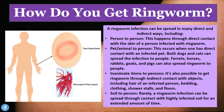Ringworm infection can be spread in many direct and indirect ways, including person to person. This happens through direct contact with the skin of a person who is infected with ringworm. This is especially common in a kindergarten or daycare setup where children playing together can come into direct skin contact with the lesion on a friend's body and contract the disease in this way.